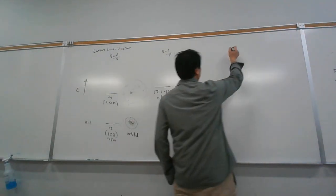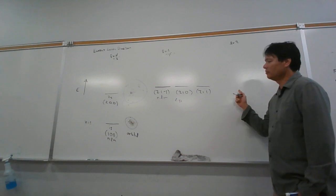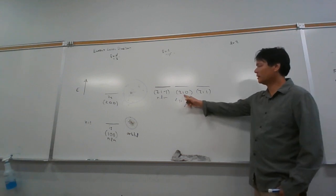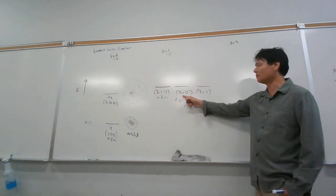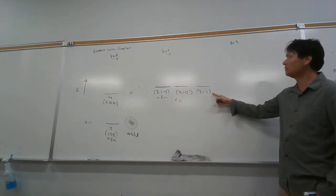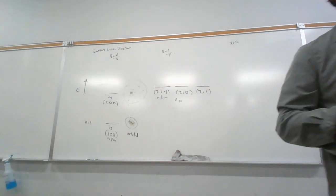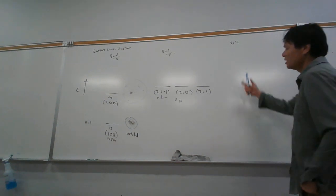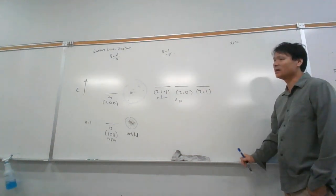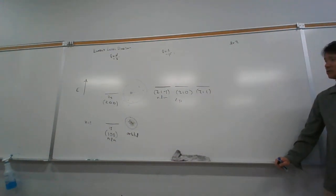Is l equals 2 possible here? In this case, l equals 2 would be forbidden. The reason is that the maximum l value we can have is n minus 1. With n equals 2, that's 1. So if we try to plug in l equals 2 when n equals 2, it gives us a forbidden energy - it's not a solution to the Schrödinger equation.